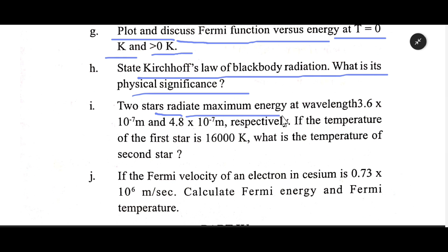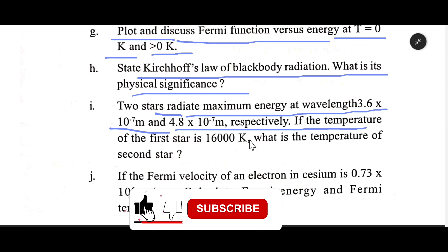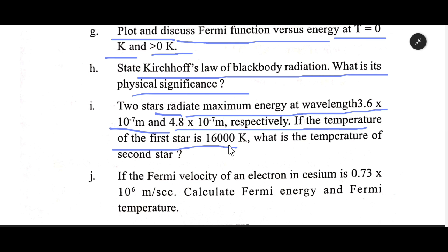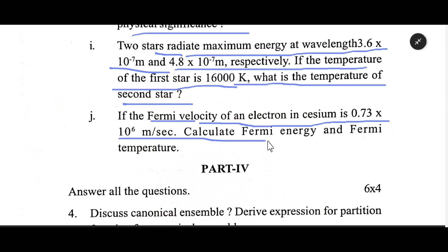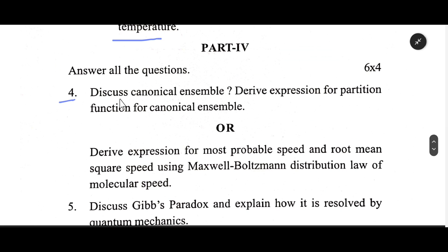Two stars radiate maximum energy at wavelengths 3.6 × 10⁻⁷ m and 4.8 × 10⁻⁷ m respectively. If the temperature of the first star is 16,000 K, what is the temperature of the second star? If the Fermi velocity of an electron is 0.73 × 10⁶ m/s, calculate the Fermi energy and Fermi temperature.